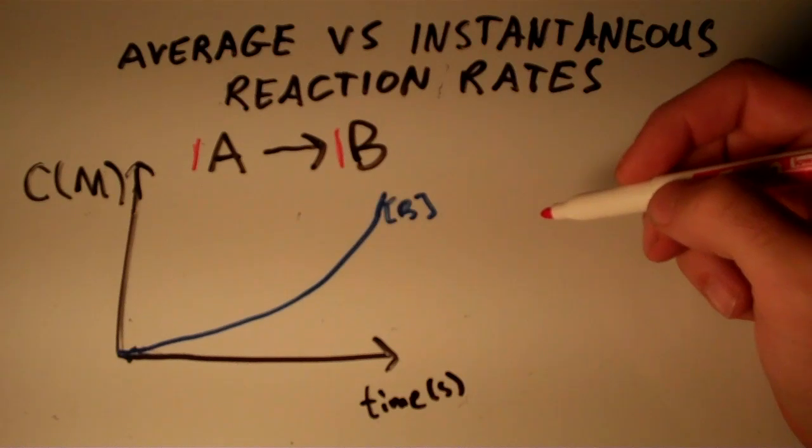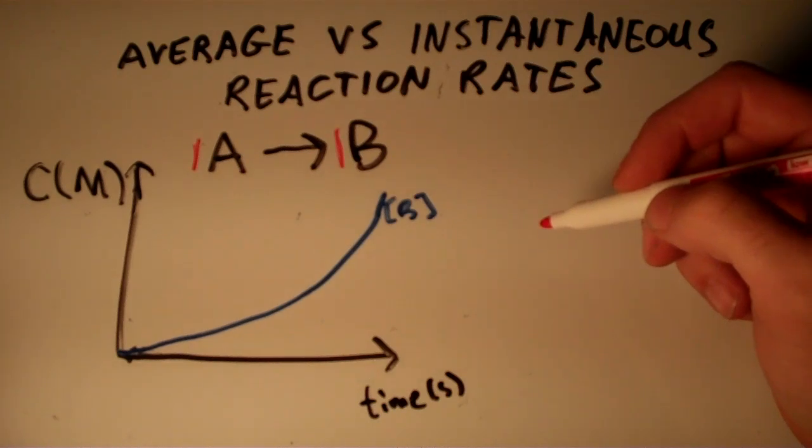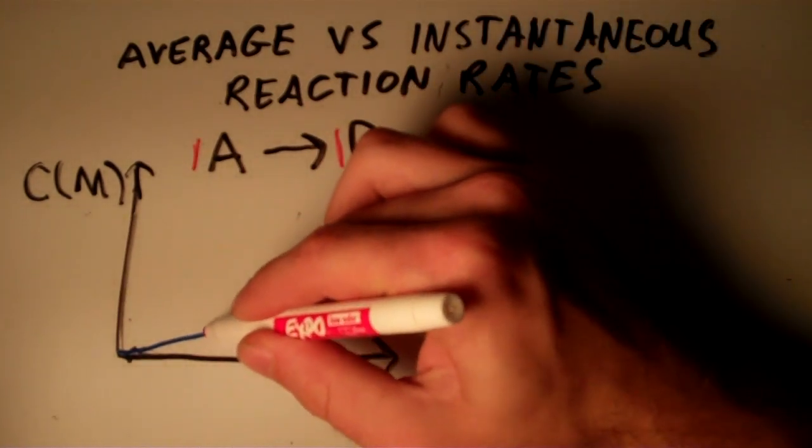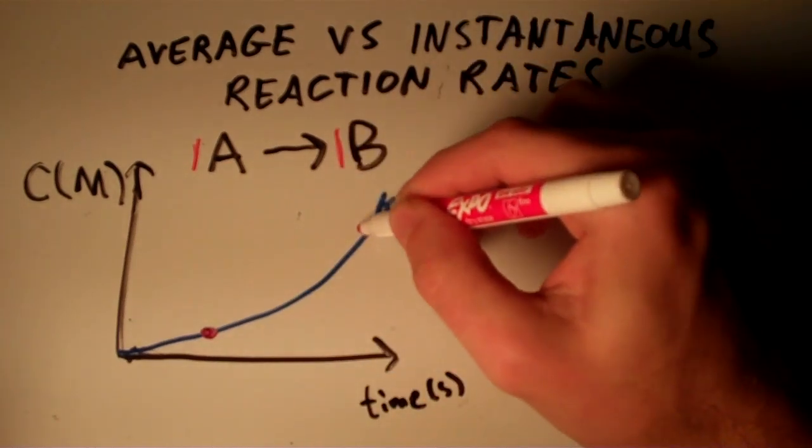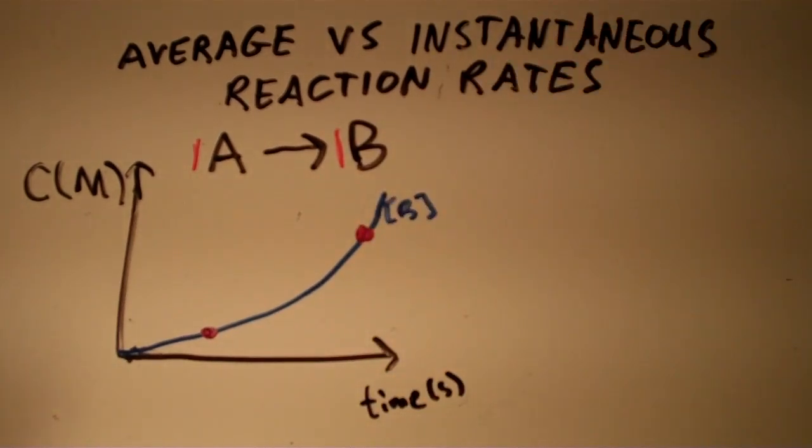First let's go over how we generally get an average reaction rate. In general what we do is we pick two points to work with. I'll just pick two points. How about those two?